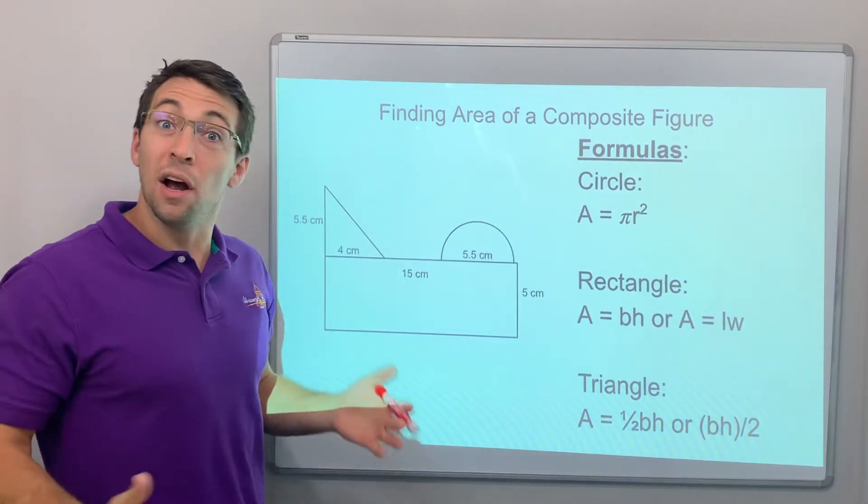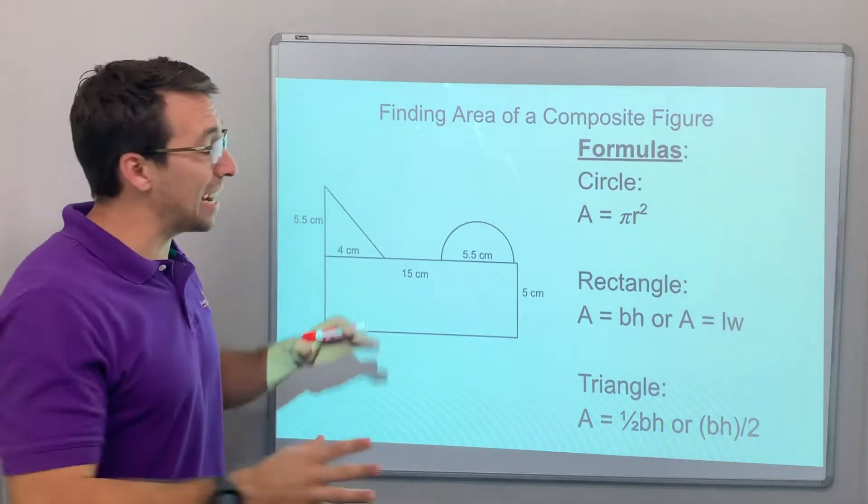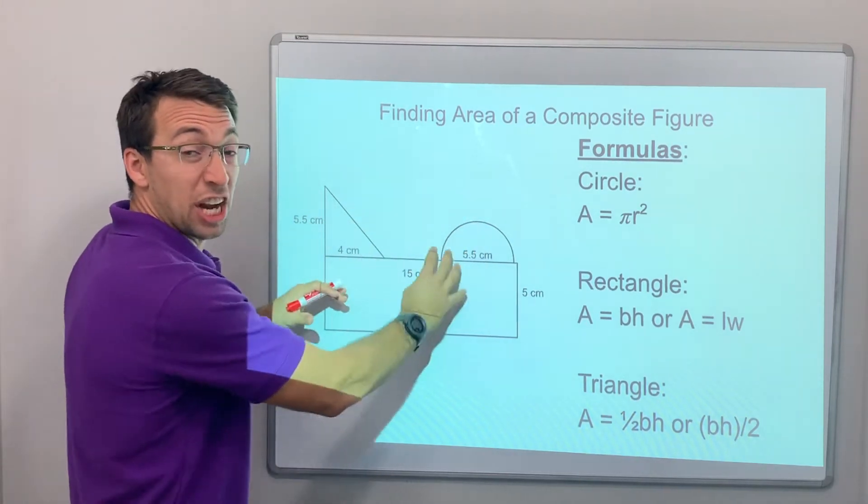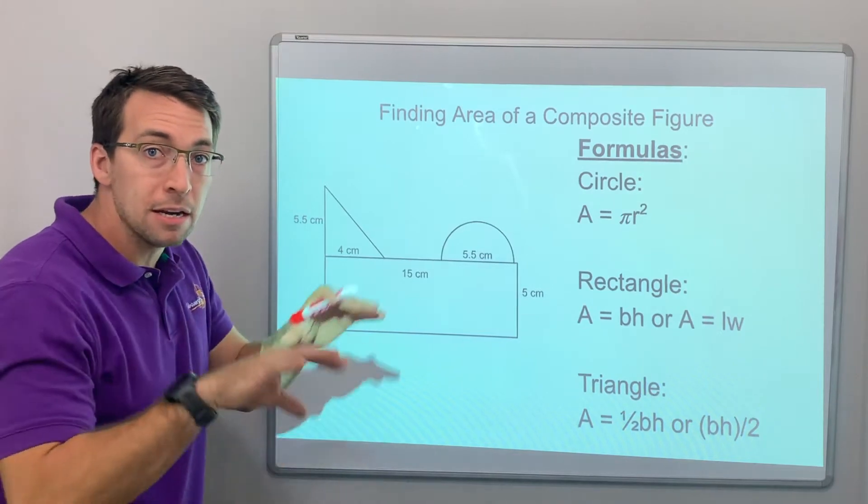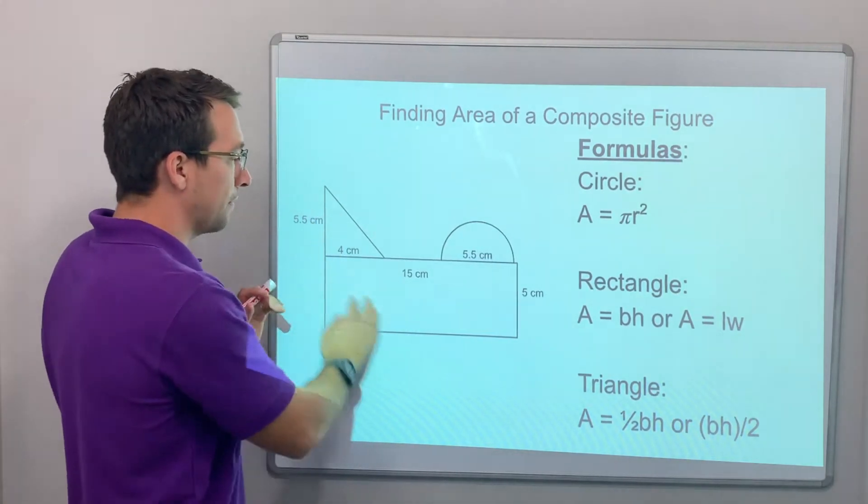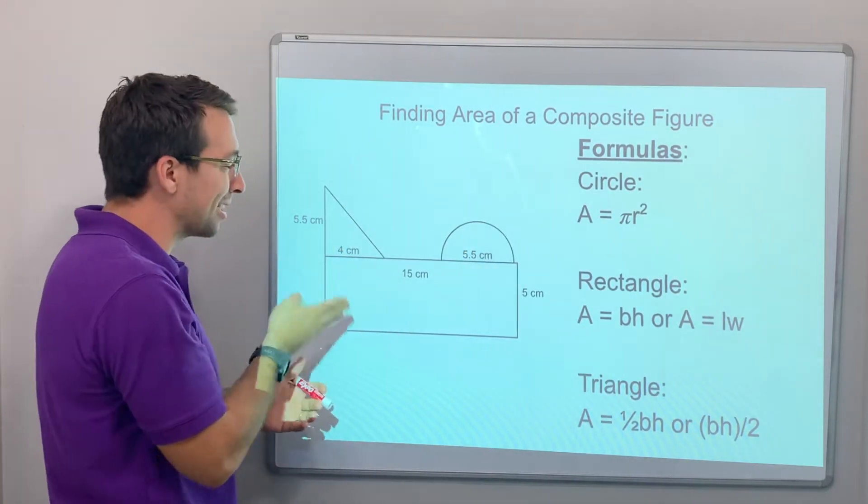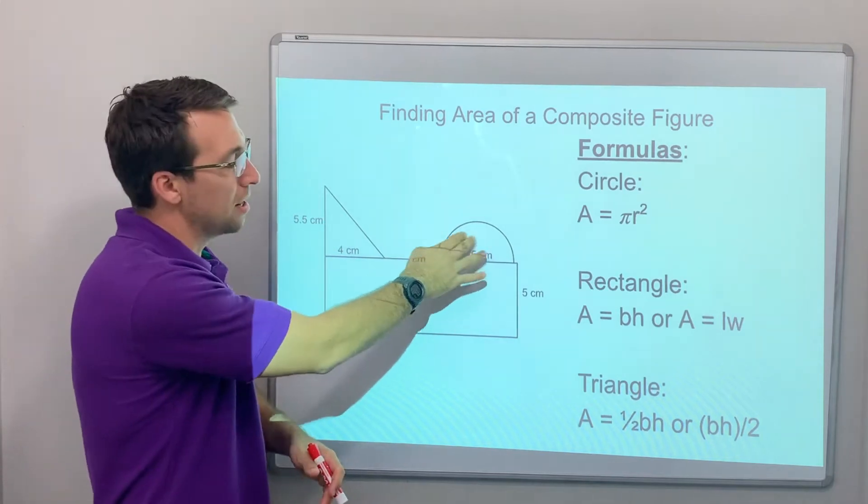What's a composite figure? A composite figure is anytime you have a big shape that you can break into independent shapes, right? Independent figures. So here we have this craziness, but it's really a triangle, a rectangle, and then a half circle.